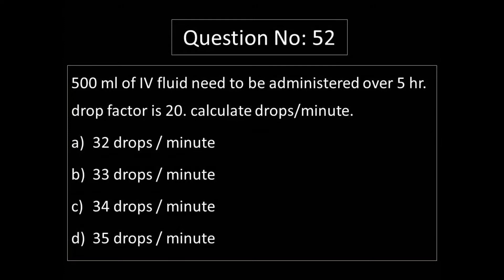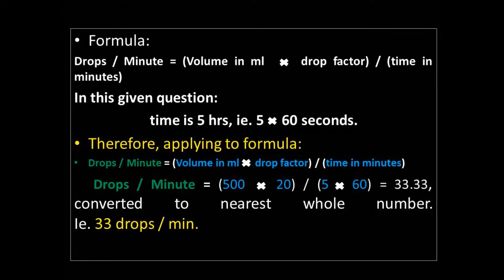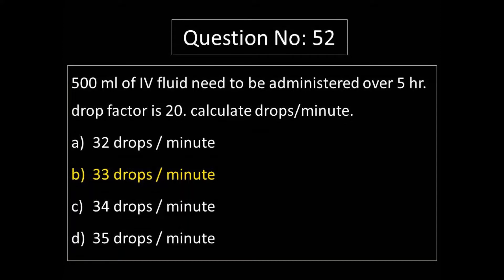Drops per minute — how to calculate the formula. Drops per minute equals Volume in ml multiplied by drop factor, divided by time in minutes. The answer is Option B: 33 drops per minute.